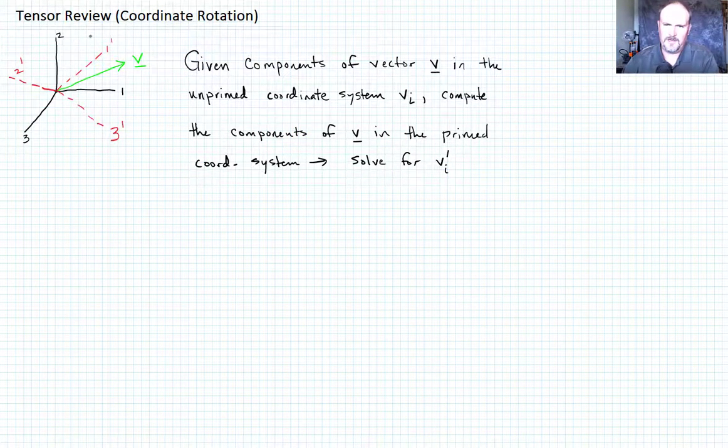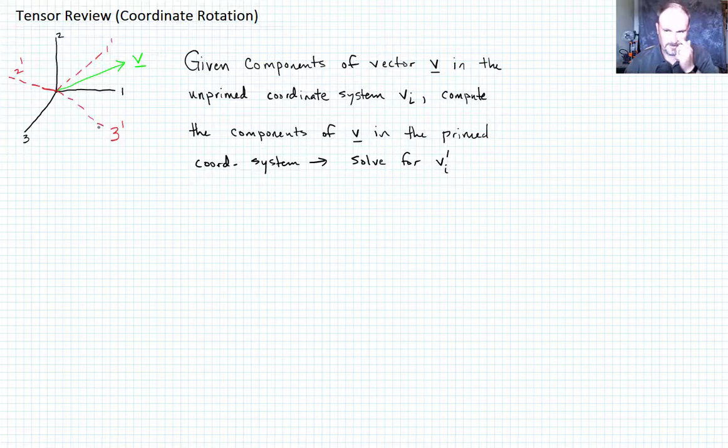What I'm showing you here is basically, in black, the original coordinate system, the 1, 2, 3 coordinate system that we talked about. And then, using the red dotted lines, I'm showing you some arbitrary rotated coordinate system, the primed coordinate system, defined as 1 prime, 2 prime, and 3 prime directions. Still orthogonal directions, but now the whole system is rotated.